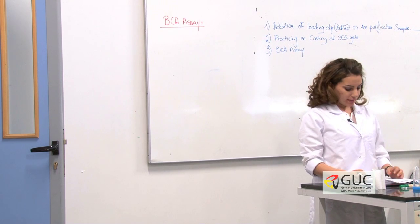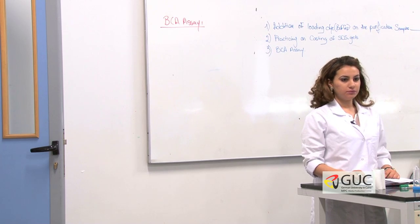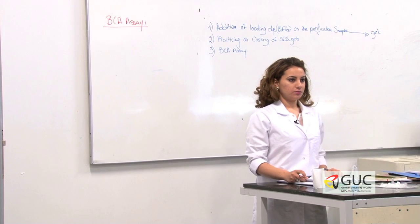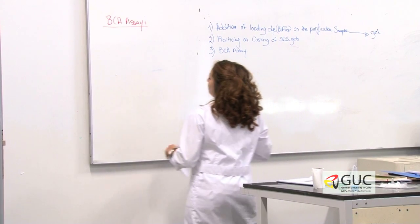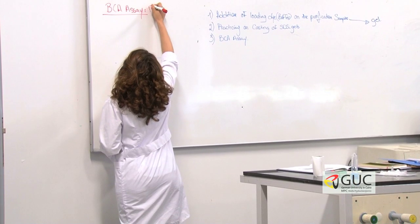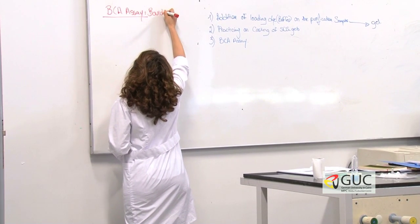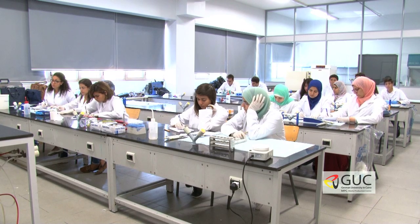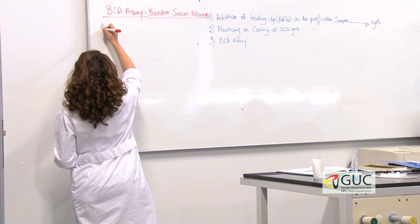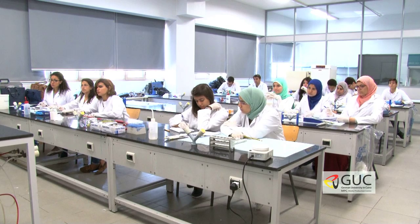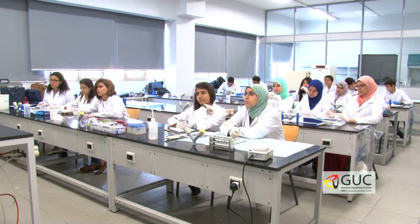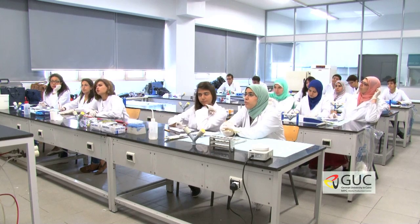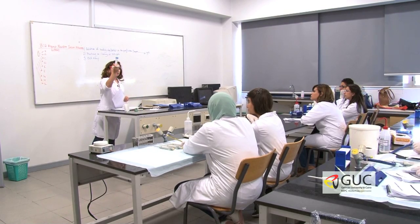There is a table. The vials will be labeled from A, B, C, D till I — so we have nine standards, dilution of the standards. BCA is bovine serum albumin. We have a diluent. What is our diluent? The dilution buffer. The dilution buffer is here.